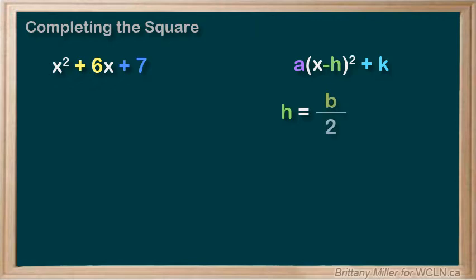Suppose we have x squared plus 6x plus 7. We need to make this fit into vertex form and to do that we need to mess with it a little bit. I'll tell you right now that h in the vertex form is always going to equal b over 2 or half of b. In this example 6 over 2 equals 3 so we need to get something that we can factor into x plus 3 squared.